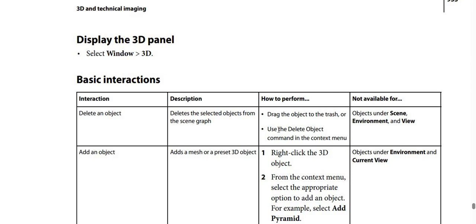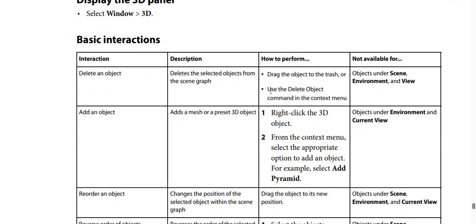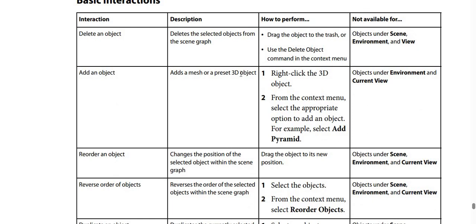The basic interactions table has four columns: Interaction, Description, How to Perform, and Not Available For. For the delete an object interaction, the description is: delete the selected objects from the scene graph. To perform it, drag the object to the trash or use the Delete Object command in the context menu. Not available for objects under the scene environment and view.